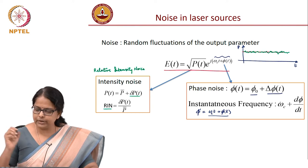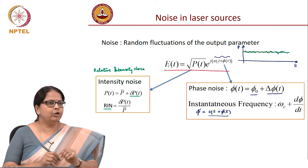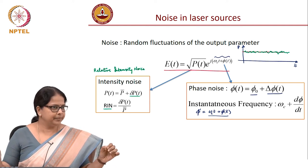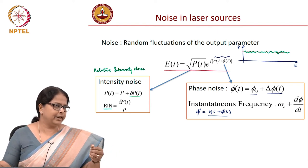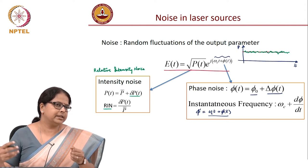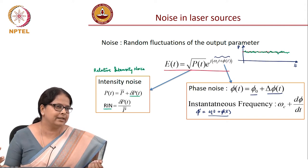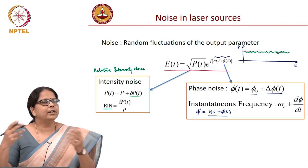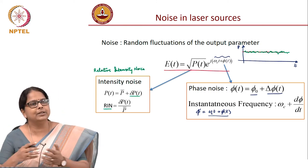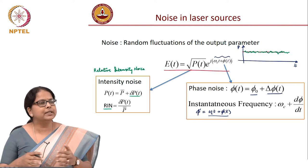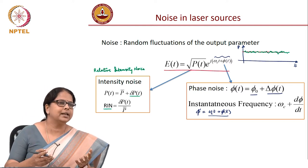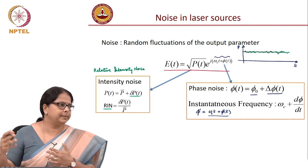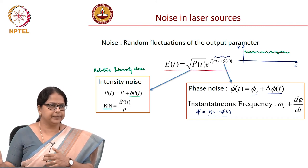What is the consequence of phase noise, and in what domain will I represent it? Intensity noise is represented in the time domain — that is a natural way of representing it. How do I represent phase noise? Phase noise is like a phase modulation, and the real consequence is a change in frequency. So you would start representing phase noise in the frequency domain, in the spectral domain.